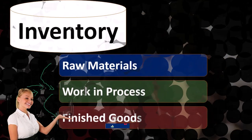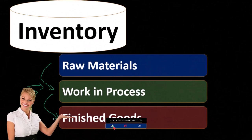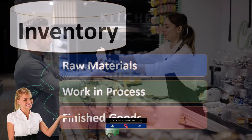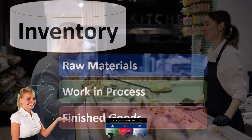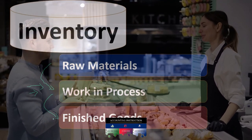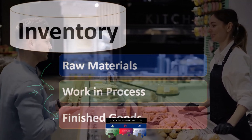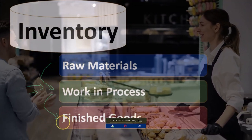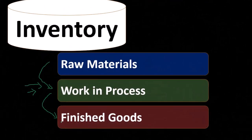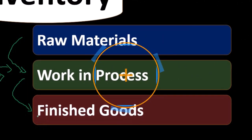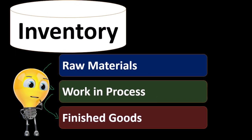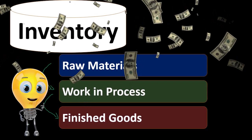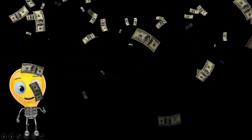After the inventory is sold, it moves to cost of goods sold on the income statement, just as it would for a normal merchandising company that purchases and sells goods. Once it's in the finished goods state, we're in a similar position as a merchandiser ready to sell. The next step is the sale, followed by recording the expense in the form of cost of goods sold.